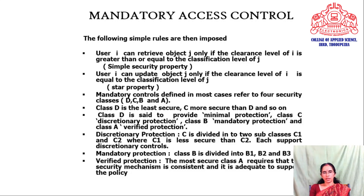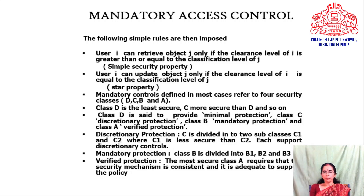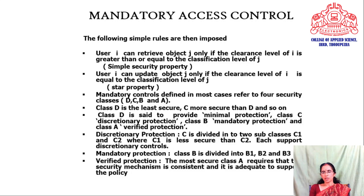The mandatory access control levels are defined using four security classes: D, C, B, and A. Class D is the least secure, and security increases through C, B, up to A. Class D provides minimal protection; class C provides discretionary protection; class B provides mandatory protection; and class A provides verified protection. The most secure class, A, requires that the security mechanism is consistent and adequate to support the defined policy.